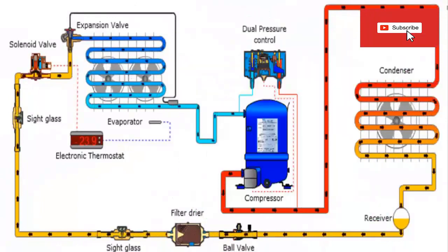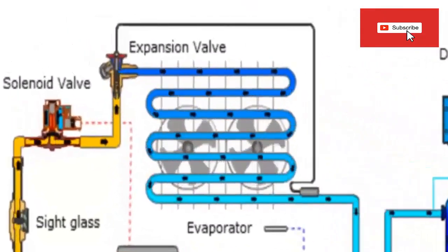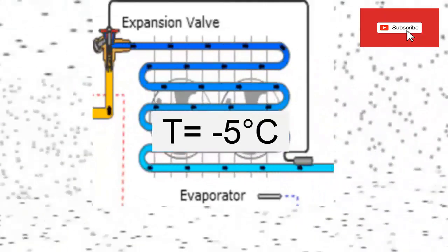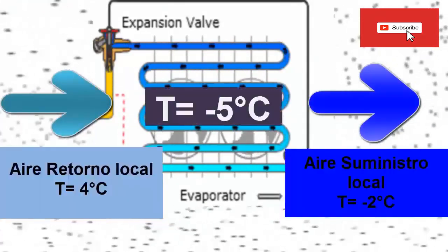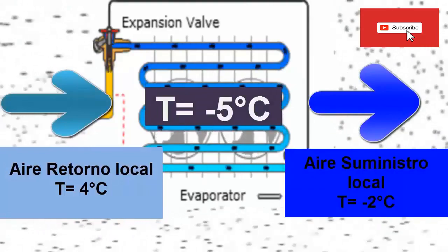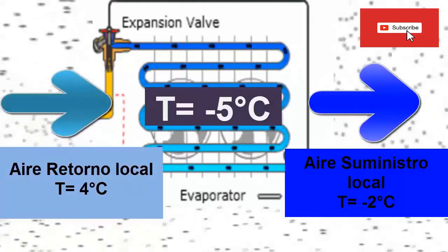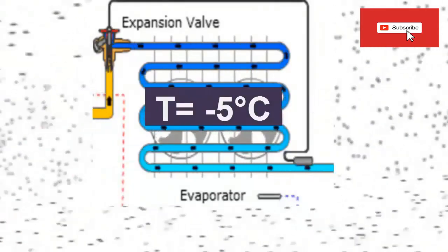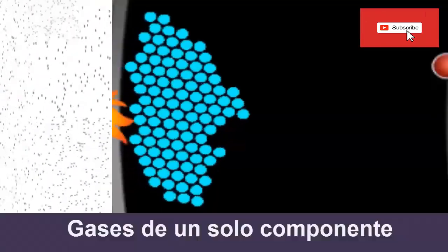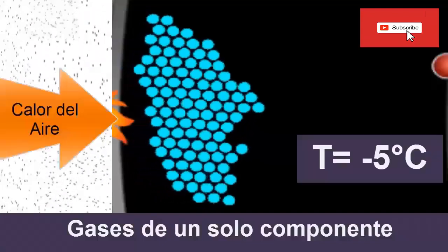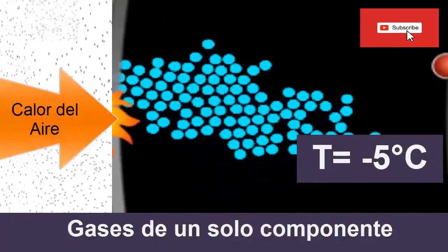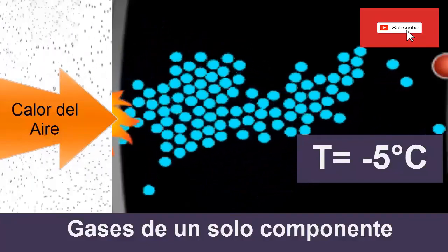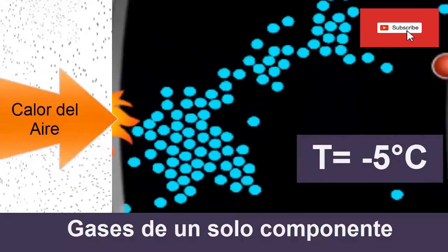The refrigerant gas in a refrigeration cycle can absorb heat from the air in a room because it has a very low temperature. In the evaporator, the heat from the air passes to the refrigerant, therefore the air loses temperature, while the heat that was from the air remains in the refrigerant, but there is no increase in its temperature because the refrigerant uses the heat to pass from the liquid phase to the vapor phase.